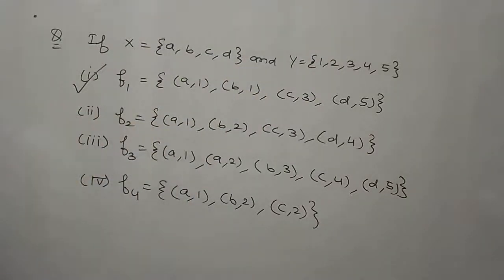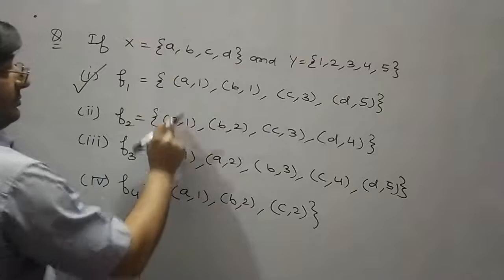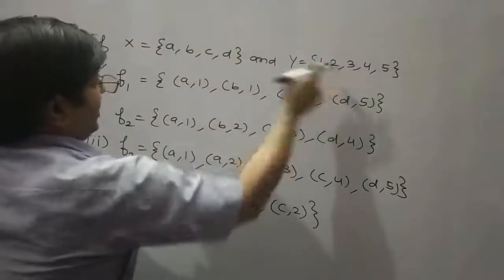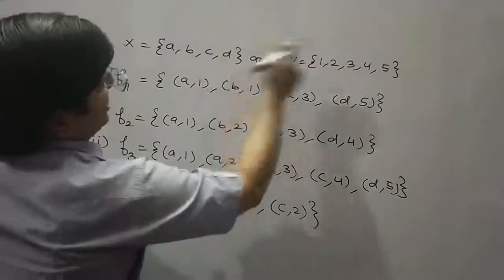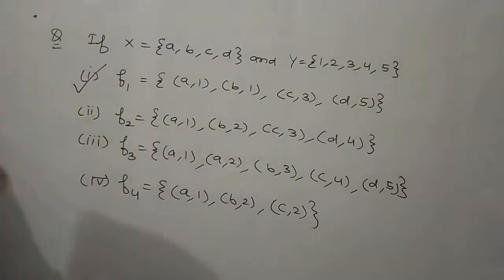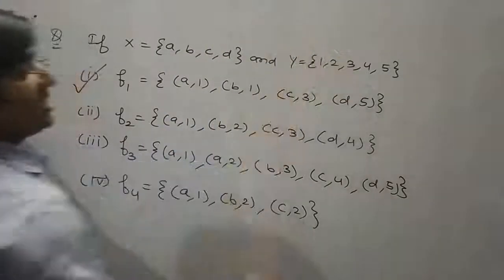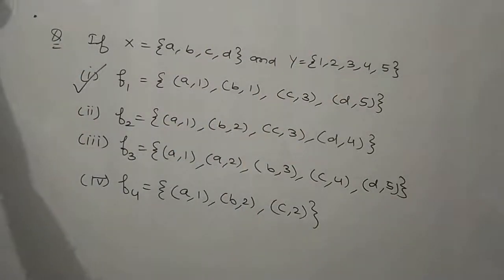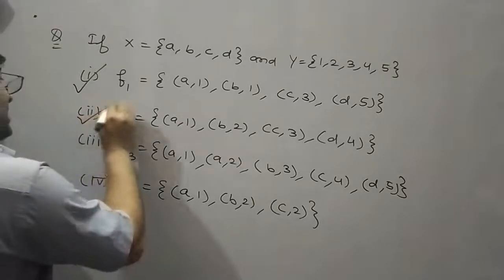Now come to the second type. F2 = {(A,1), (B,2), (C,3), (D,4)}. Again the same case — for each element of capital X, there exists a unique element of Y. That is why F2 is also a function.